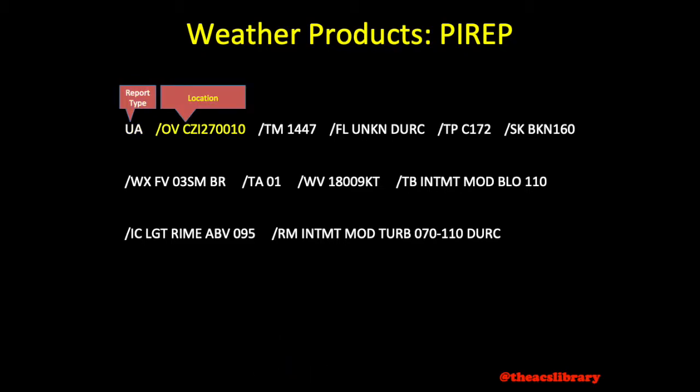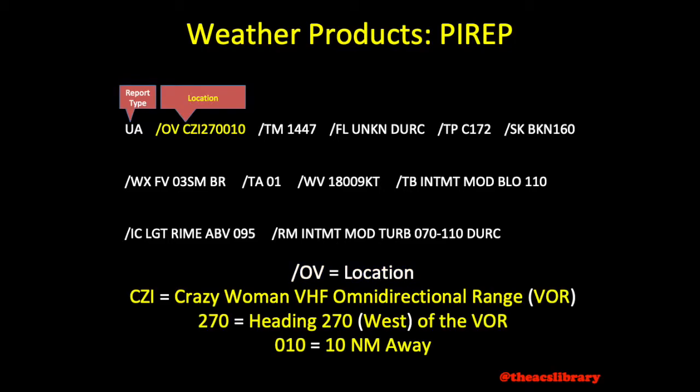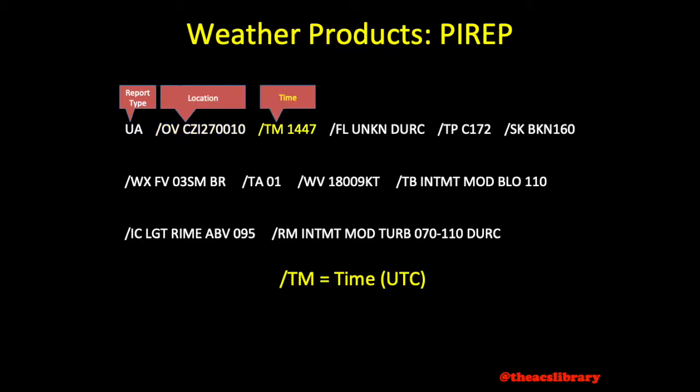Next is the location, coded /OV followed by a description of the location. In this case, our conditions were encountered 10 miles west of the Crazy Woman VOR. The location may also be depicted as a route segment rather than a singular point. After that, we have the time, coded /TM, followed by the four-digit Zulu time at which the conditions occurred or were encountered.